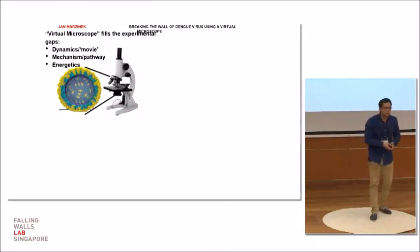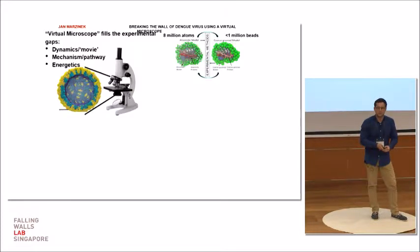Although supercomputers are becoming more and more powerful, we cannot probe the dynamics of the viruses because they have a lot of atoms. We're talking about millions of atoms. So what we can do, we can represent atoms as beads, group them into beads, and decrease the computational power.